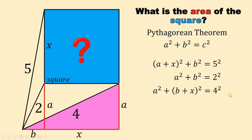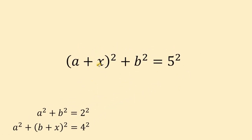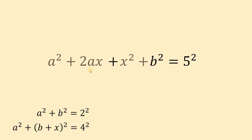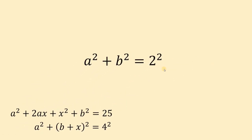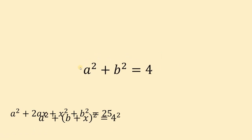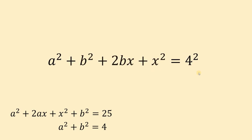We now have 3 equations and 3 unknowns, and our goal is to solve for x or simply x², which is the area of the square. Let's focus on these 3 equations and simplify each. Expanding (a + x)²: a² + 2ax + x² + b² = 25. The second equation: a² + b² = 4. The third equation: a² + (b + x)² gives us a² + b² + 2bx + x² = 16.